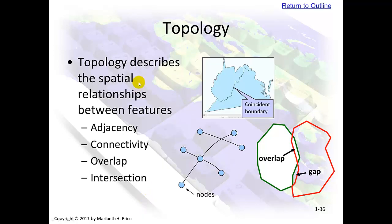Topology describes the spatial relationships between features: adjacency, connectivity, overlap, and intersection. Here is some overlap, and here is some gap. We don't get into that too much in this course, but you will if you go on to further courses — we're just touching on it here.